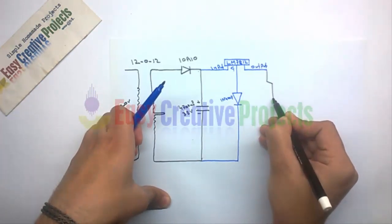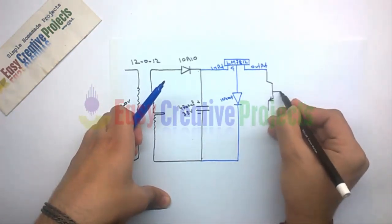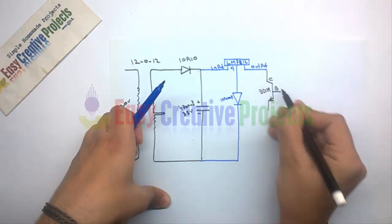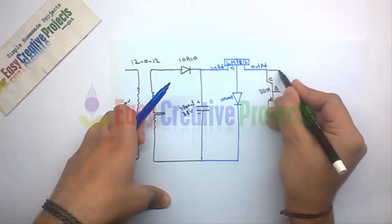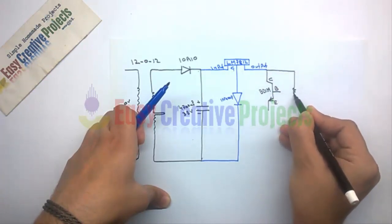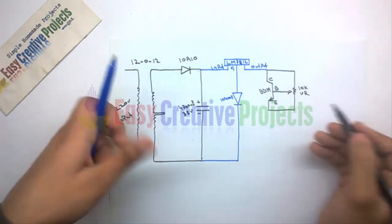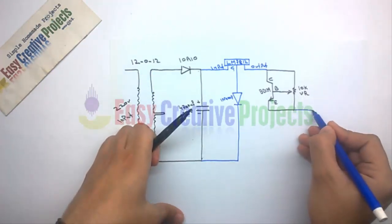Now collector pin of BD139 connect with output wire of voltage regulator. Now variable resistor middle pin connect with base of BD139. First and third pin connect with collector and emitter pin like diagram.